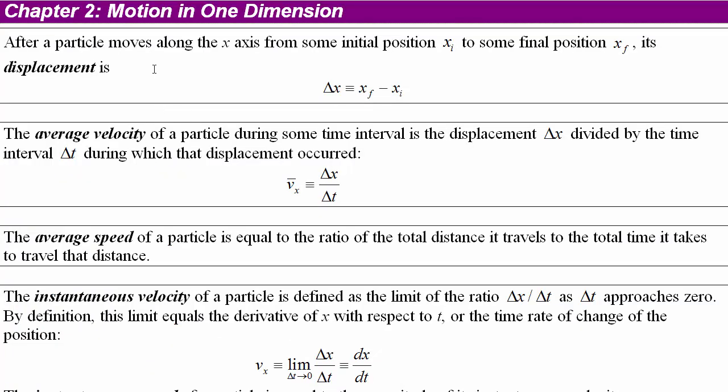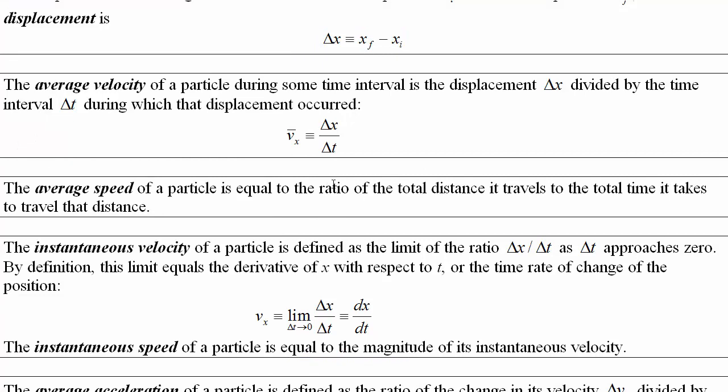Chapter 2, Motion in One Dimension. After a particle moves along the x-axis from some initial point to a final point, then it's got a displacement, which is the change in its position. Final minus initial is delta. The average velocity would be its displacement over time. So the change in position divided by change in time. Speed is the magnitude of the velocity at any instant. So the average speed would be equal to the ratio of the total distance it traveled, not the displacement, to the total time it took to travel that distance.